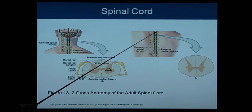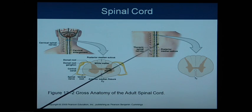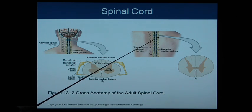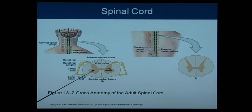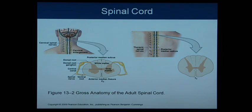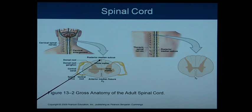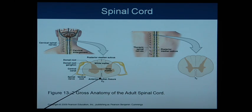Here we can see the spinal cord continuing down through the thoracic section of the spine. If we take a cross-section from the spinal cord and blow it up, you can see the spinal cord has a butterfly pattern on the inside of gray matter, with white matter surrounding it. Gray matter is the unmyelinated axons accumulating together, and white matter is the myelinated neurons. On the posterior side we have the posterior median sulcus, and on the anterior side a deep groove called the anterior median fissure.